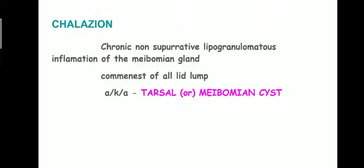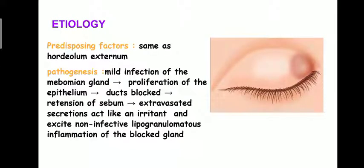The third eyelid condition is chronic non-suppurative lipogranulomatous inflammation of the meibomian gland, called chalazion. This is a non-infective condition and is the commonest of all lid lumps. It is also called tarsal cyst or meibomian cyst. The pathogenesis: mild infection of the meibomian gland leads to proliferation of the epithelium, causing the ducts to get blocked, leading to retention of sebum. The extravasated sebum acts as an irritant, exciting the non-infective lipogranulomatous inflammation of the blocked gland.